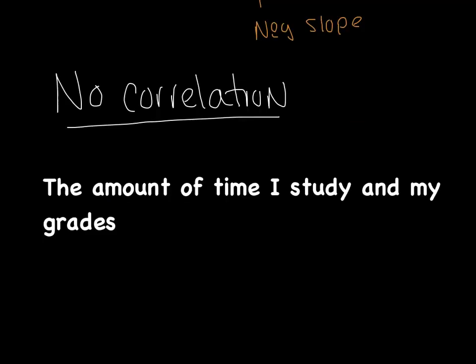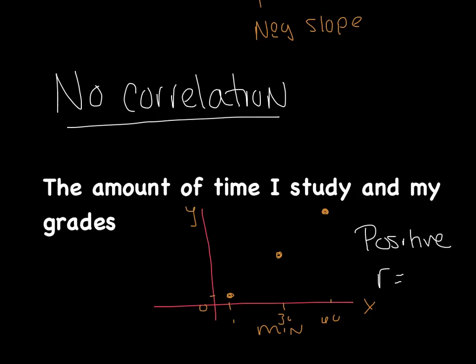So let me give you this example. The amount of time I study and my grades, what type of correlation do you think they would have? Well, think about this. This is my x-axis. This is my y-axis. If I studied for, let's say this is in minutes, maybe one minute, I would say my grade is probably going to be, if not a zero, pretty darn close to it. It would be pretty low. If I studied maybe for 30 minutes, I would say my grade would go up quite a bit. If I studied for 60 minutes, I think my grade would go up even higher. So I would say that this has a positive correlation. Okay? Now, it may not be perfect. It may not be a one. But I would say my r-value is pretty high. Maybe like a 0.9. I can clearly see that it's moving in an upward direction. So I know my r-value and my correlation is positive. But it may not be perfect.